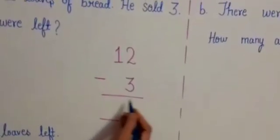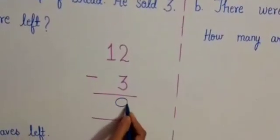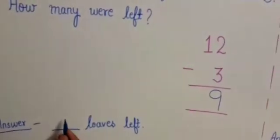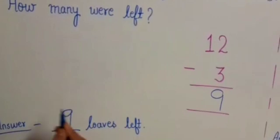So 12 minus 3 is equal to 9. So how many loaves were left? 9 loaves left.